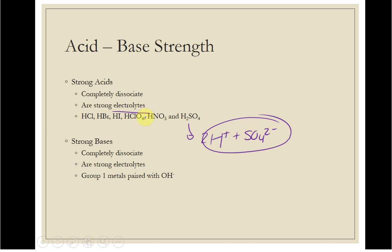Strong bases are group one metals with hydroxide. The end. Again, these completely dissociate, and so they're not going to be present as this molecule. They're going to be present as the ionic form. So again, completely dissociate strong electrolytes.